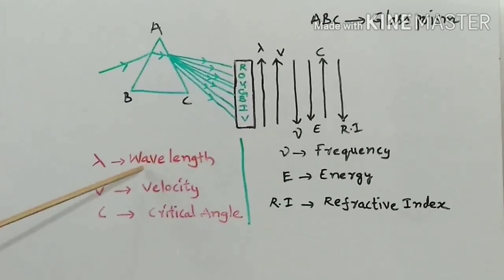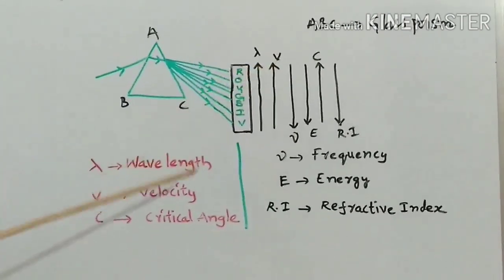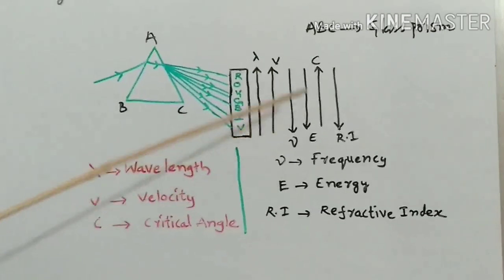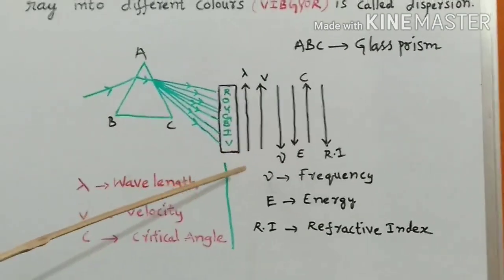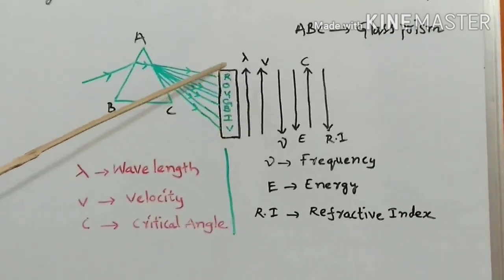Here, lambda means wavelength, V is velocity of light, C is critical angle. These increase from violet to red color.